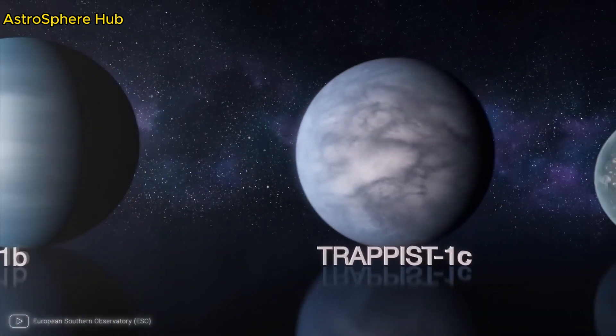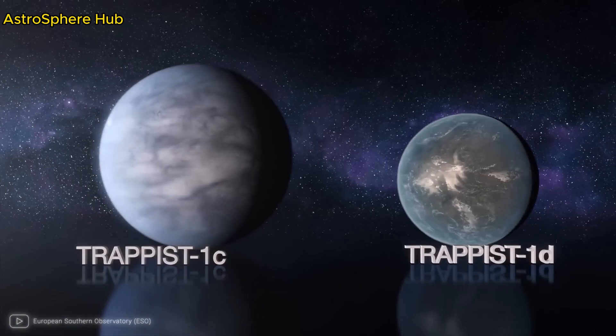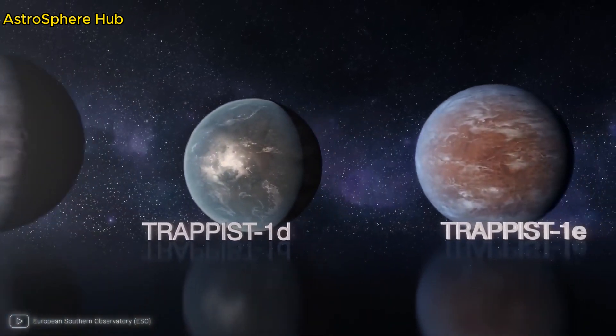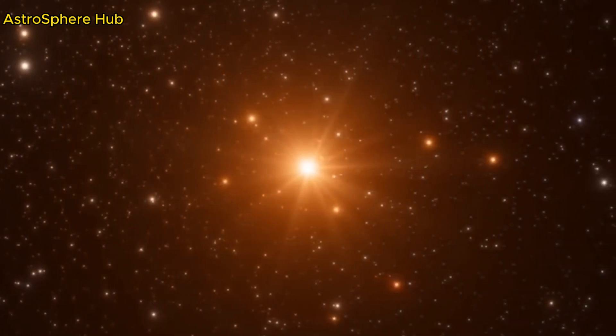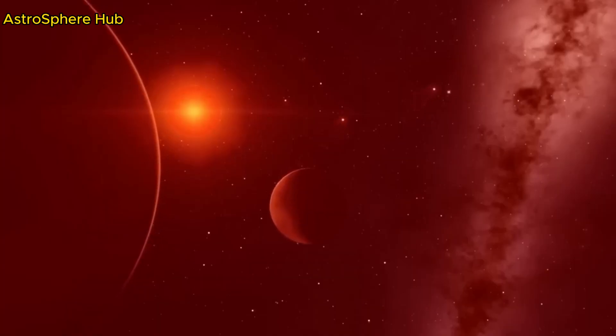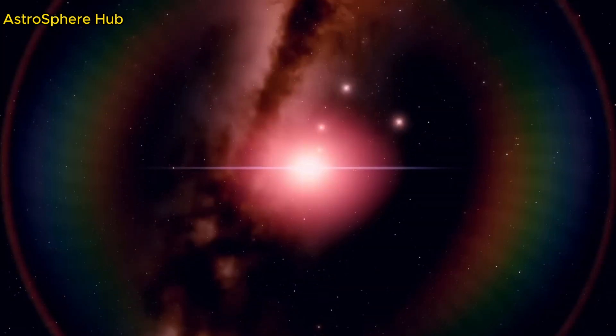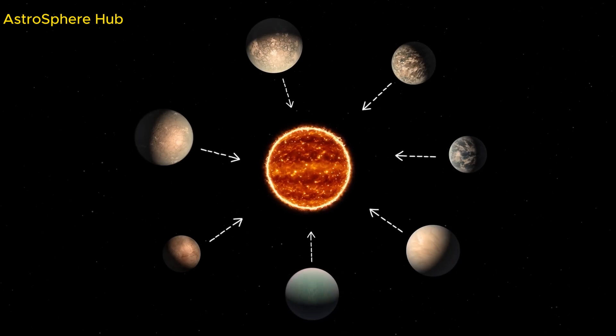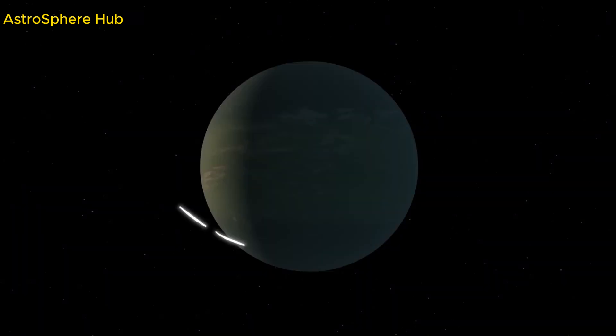But the James Webb Space Telescope is much more powerful than any other telescope known to science. Its precision in detecting brightness fluctuations is comparable to looking at 10,000 light bulbs and seeing four of them being turned off. So what has the telescope discovered about the TRAPPIST-1 system so far?